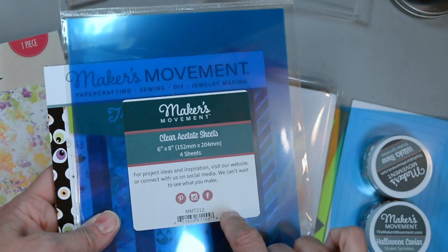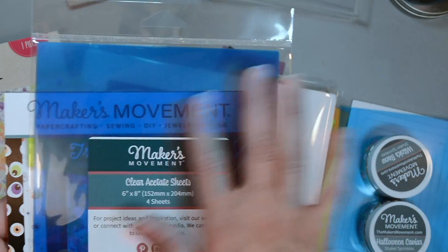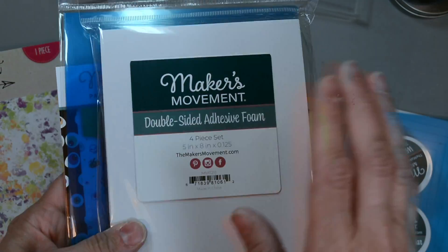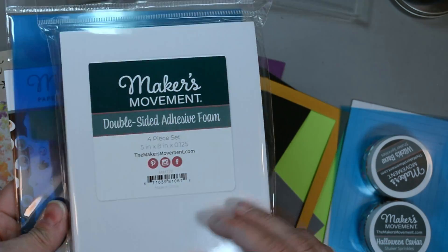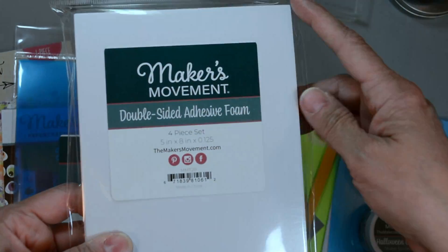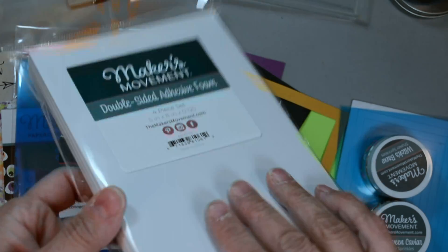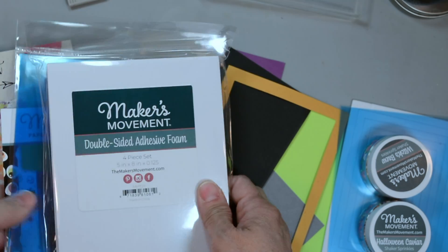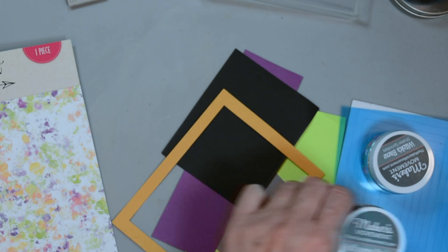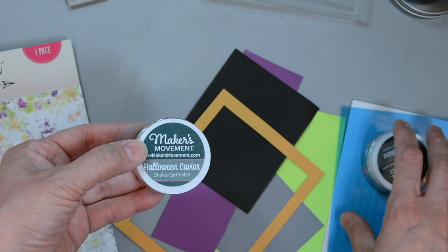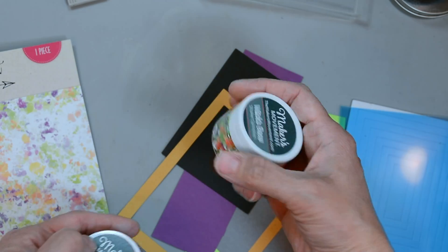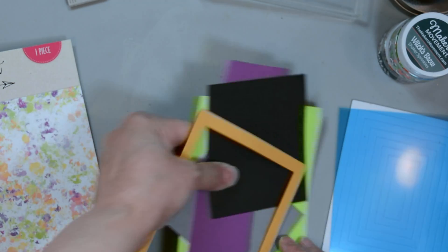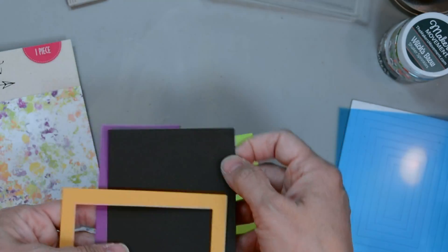I'll be using the acetate sheets and ours has a protective layer so they don't get scratched until you're ready to use them, and our double sided adhesive foam which is nice and thick. You only need to cut it once to create your foam, no doubling up on foam products. Our new Shaker Sprinkles, the Halloween Calvary and Witches Brew for our shaker bits, and then I have some coordinating cardstock here.